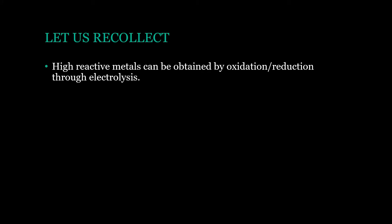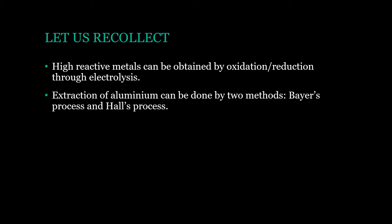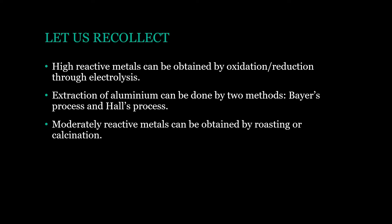Let us recollect our previous module. Highly reactive metals can be obtained by oxidation or reduction through electrolysis. Extraction of aluminium can be done by two methods: Bayer's process and Hall's process. The alumina obtained at the end of this process undergoes electrolytic reduction, where molten aluminium is obtained at the cathode and oxygen is liberated at the anode. Moderately reactive metals can be obtained by roasting or calcination. Roasting is heating metals in the presence of air, especially used for sulphide ores.